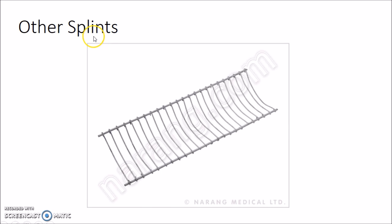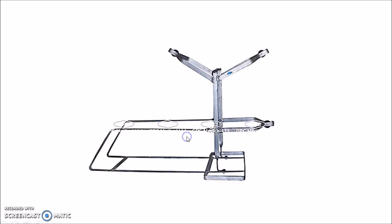There are other types of splints. The Crammer wire splint is used for temporary splintage of fractures during transportation. The Bowler bronze splint consists of pulleys and has no ring. It can be used as a replacement for the Thomas splint, but it is not suitable for transportation.